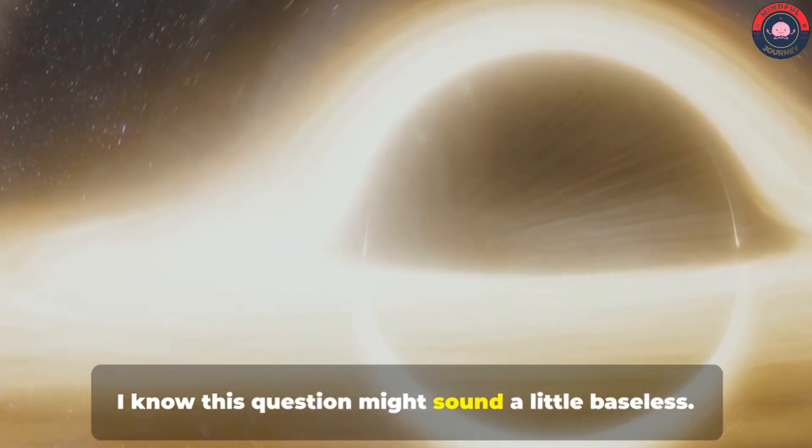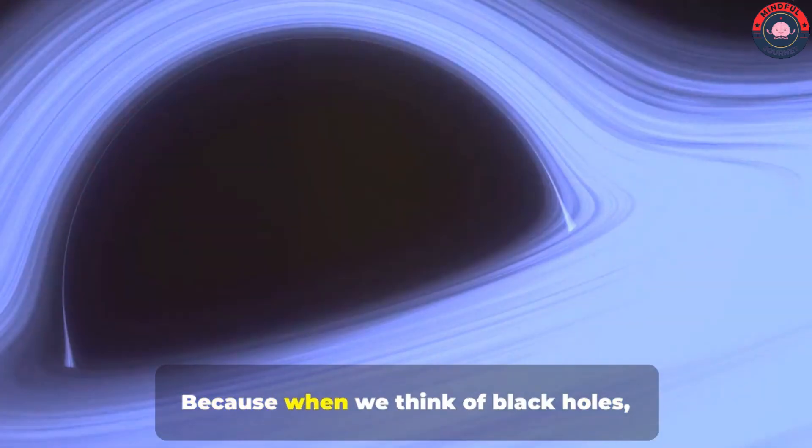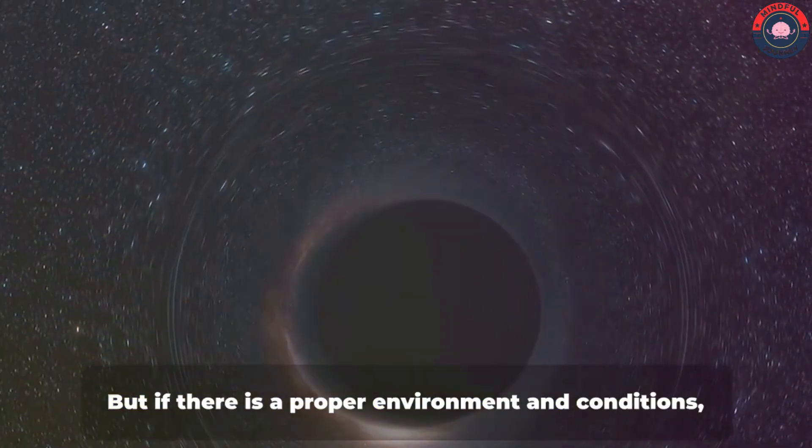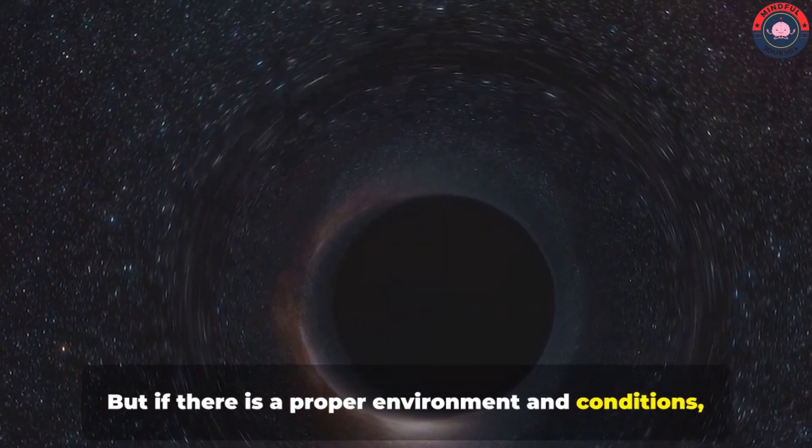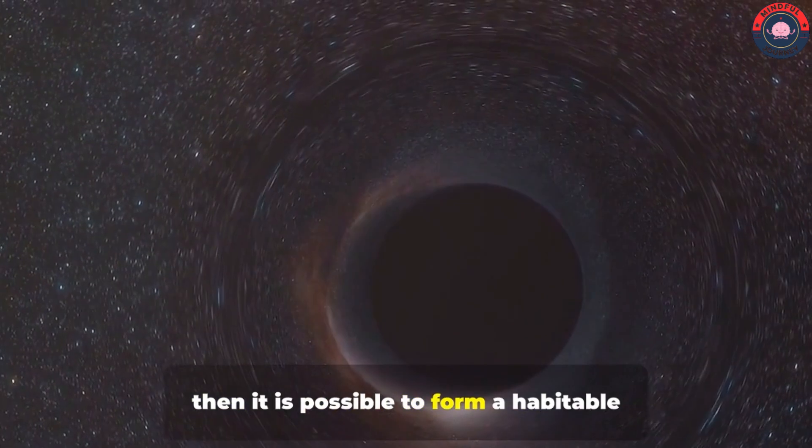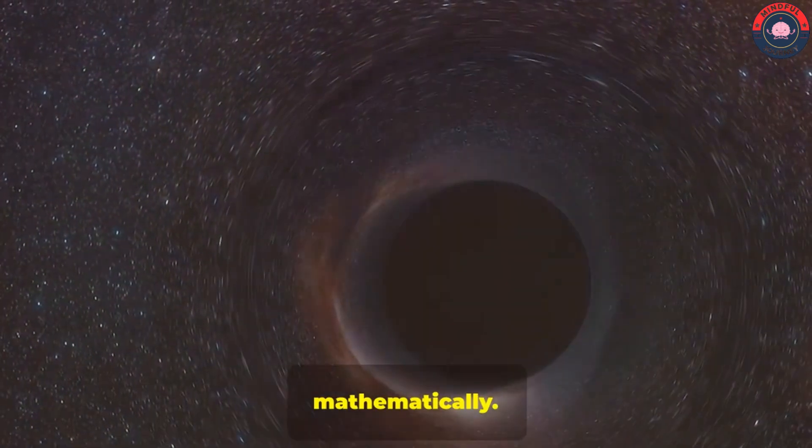I know this question might sound a little baseless, because when we think of black holes, we think of destruction. But if there is a proper environment and conditions, i.e. heat or light, everything is balanced, then it is possible to form a habitable planet there, mathematically.